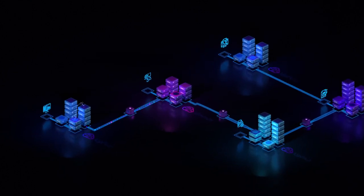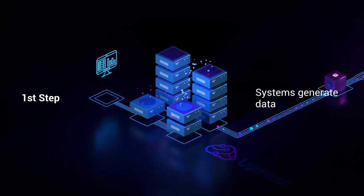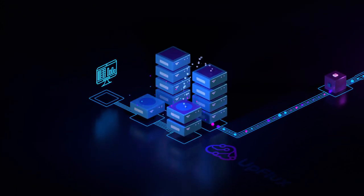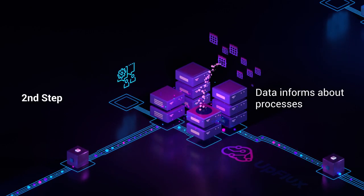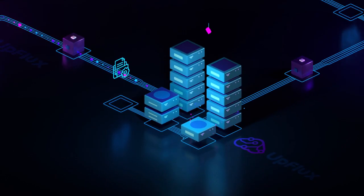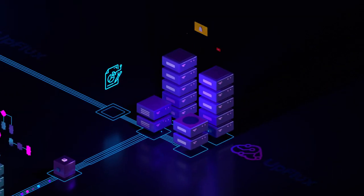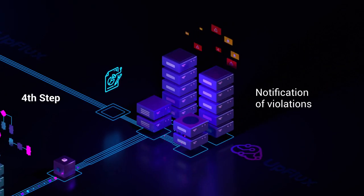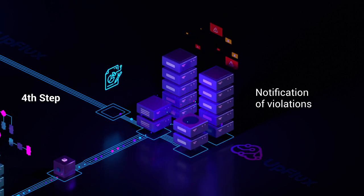How does process mining work? The systems you already use generate data. The data forms information about your processes. They are automatically mapped and process models are discovered. Reference models are defined and compared to notify of violations that occur in near real time.